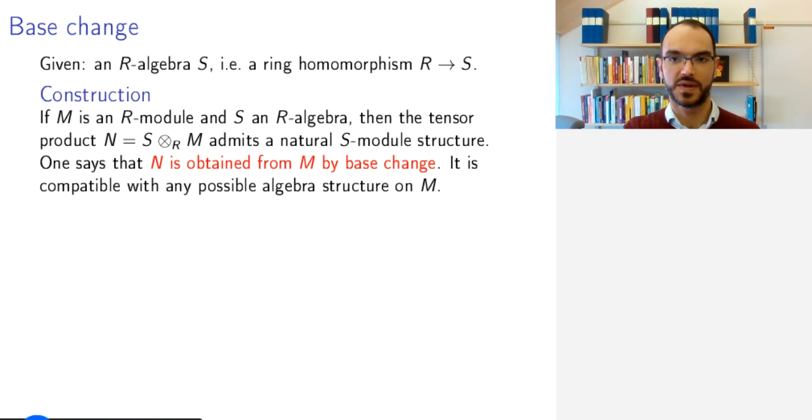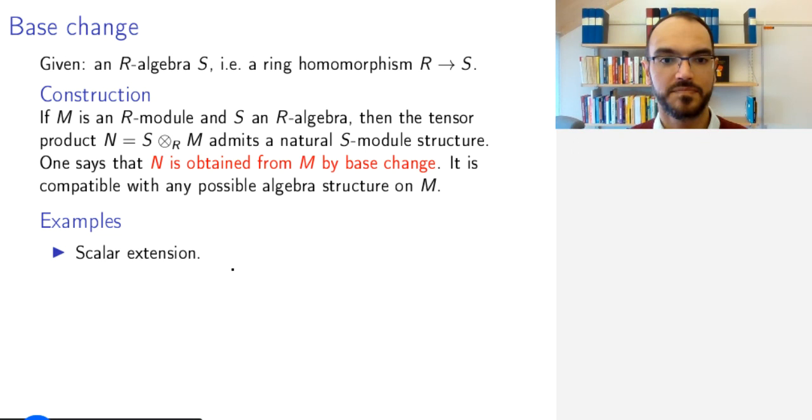Scalar extension is an example. So this is, for example, when we have a field extension. If I have K a field extension into L, and I have M a K-vector space, then I get L ⊗_K M, an L-vector space.